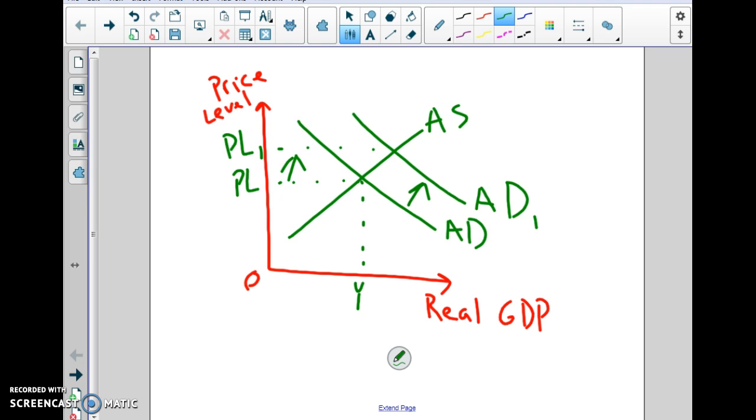So why don't you go ahead and erase that, and then I want you to show me a cost push inflation, what that would look like, and think of some things that could have caused that. So go ahead and pause me right now, and I'm going to erase this, and when you come back, we should be good to go.